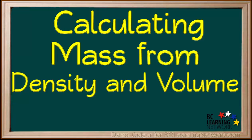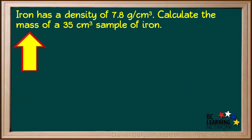The mass of a sample of material can be easily calculated if we are given the density and the volume. In this example, we are given that iron has a density of 7.8 grams per cubic centimeter, and we are asked to find the mass of a 35 cubic centimeter sample of iron.